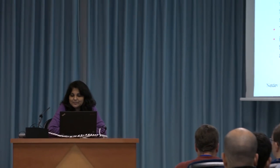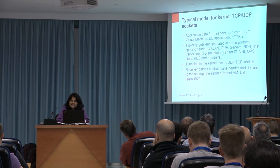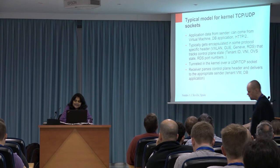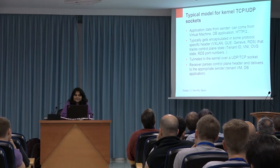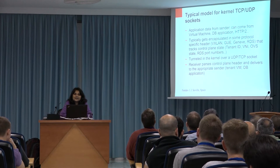To understand how to solve the problem, let's look at what happens at a high level. For these kernel sockets, the application data can come from a number of places — a virtual machine for VXLAN, a database application for things like RDS, or HTTP2 for KCM. In most cases, that application data gets encapsulated in a control plane header. VXLAN adds a VXLAN header with the tenant ID, Geneve adds OBS state, RDS adds port numbers. When you tunnel the data, on the other side that control plane header is used to demux the packet and deliver it to the right service.